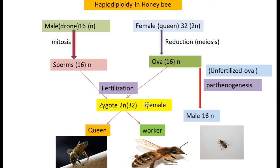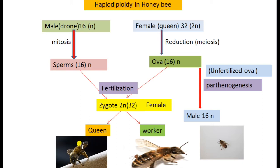Females are of two types: some become queens and some become workers. Females fed with royal jelly turn into queen bees, while those fed with pollen and honey develop into worker bees. Worker bees are female but do not have reproductive capacity. The queen has reproductive capacity and can produce ova.